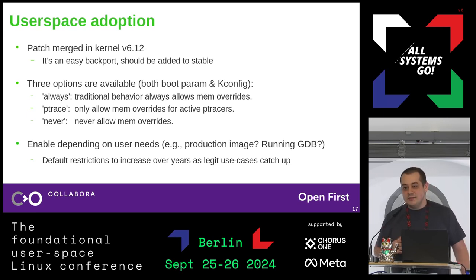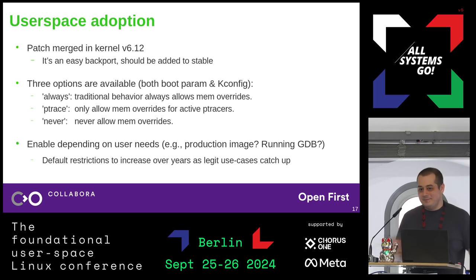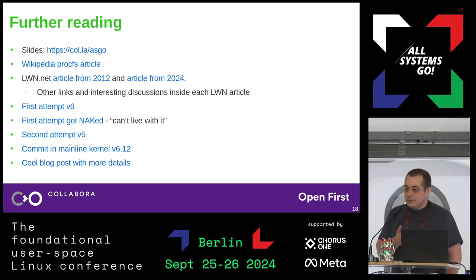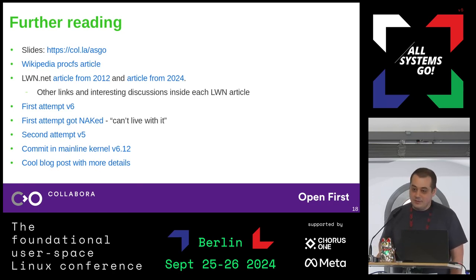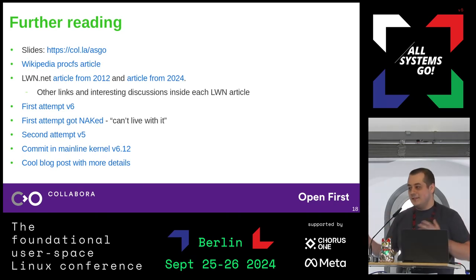There's no fixed schedule because there are a lot of moving parts and projects, and we do not want to break various use cases. This thing would have been fixed a long time ago otherwise — people have been working on it for a decade, on and off, usually revived after a big new hack was discovered. I'm giving links for further reading: access to the slides, the Wikipedia ProcFS article, two LWN.net articles — one from 2012 and one from 2024 — plus links to my first patch series, Linus's rejection message, the second attempt that landed in 6.12, and a blog post explaining how FOLL_FORCE and virtual memory work.